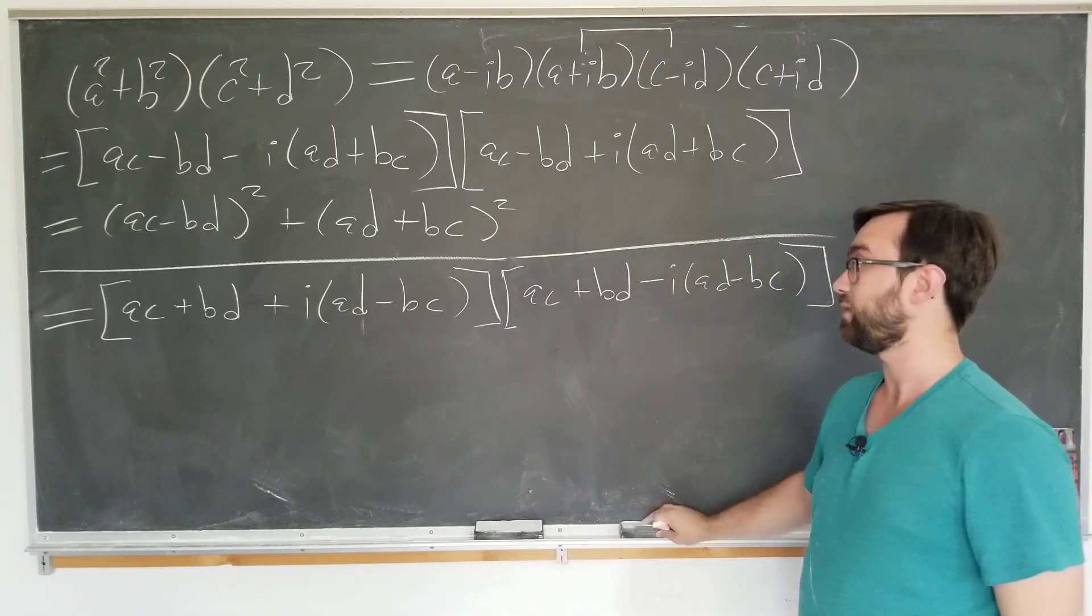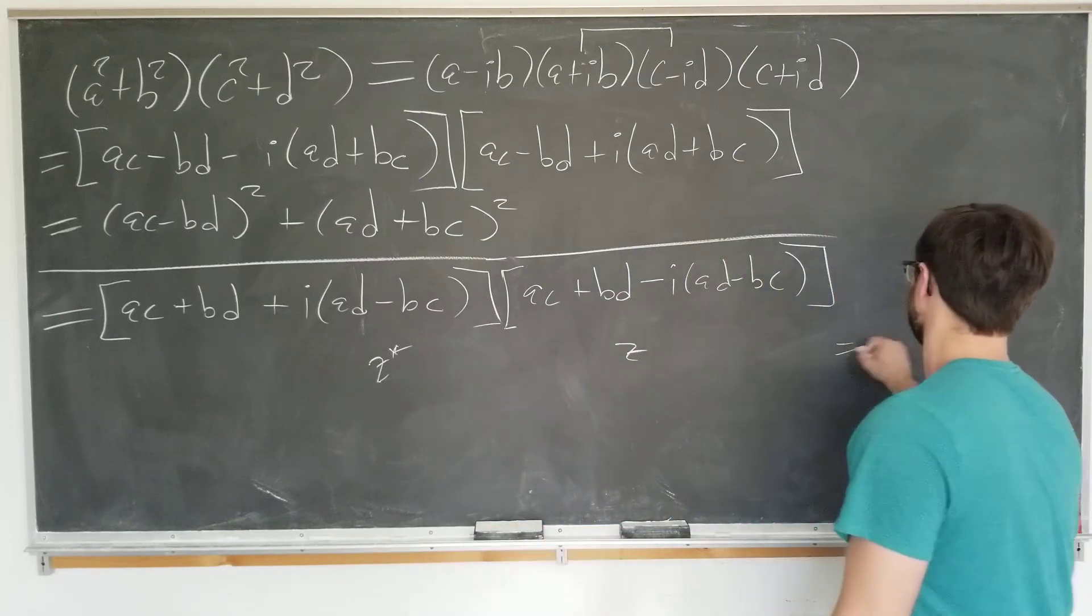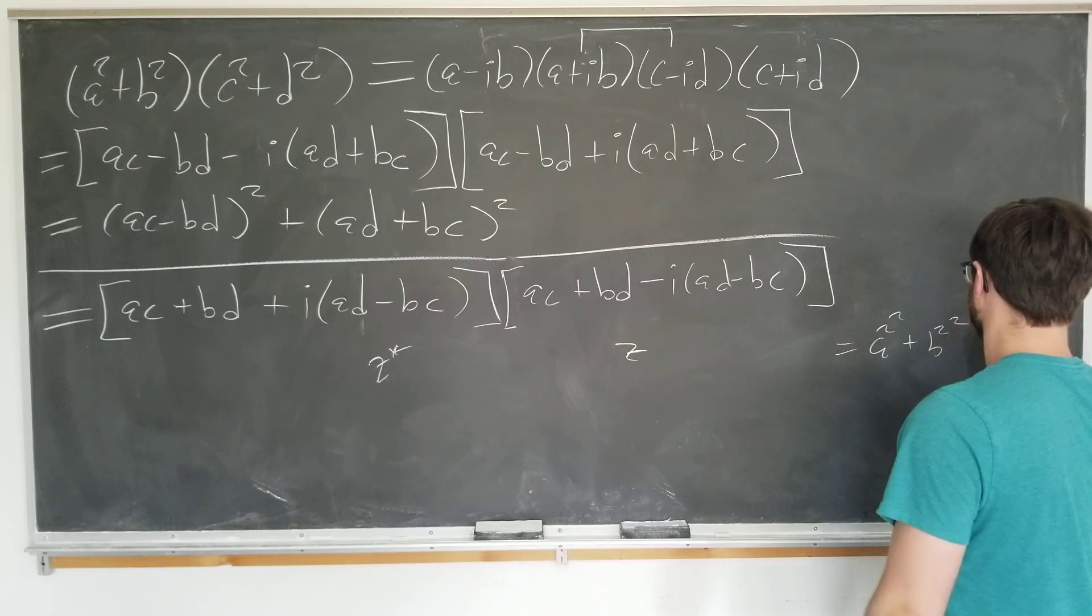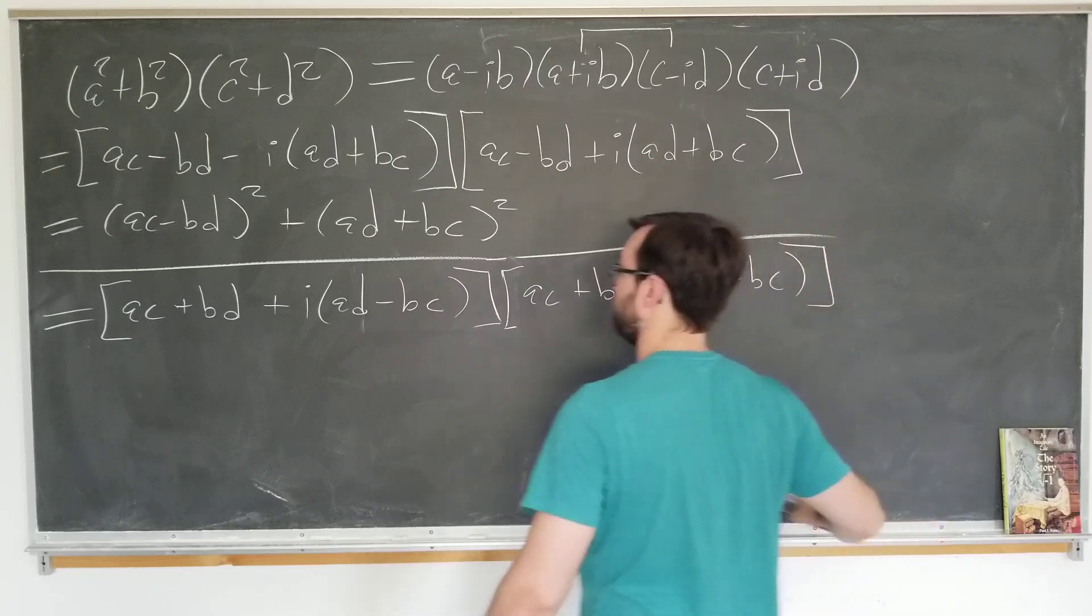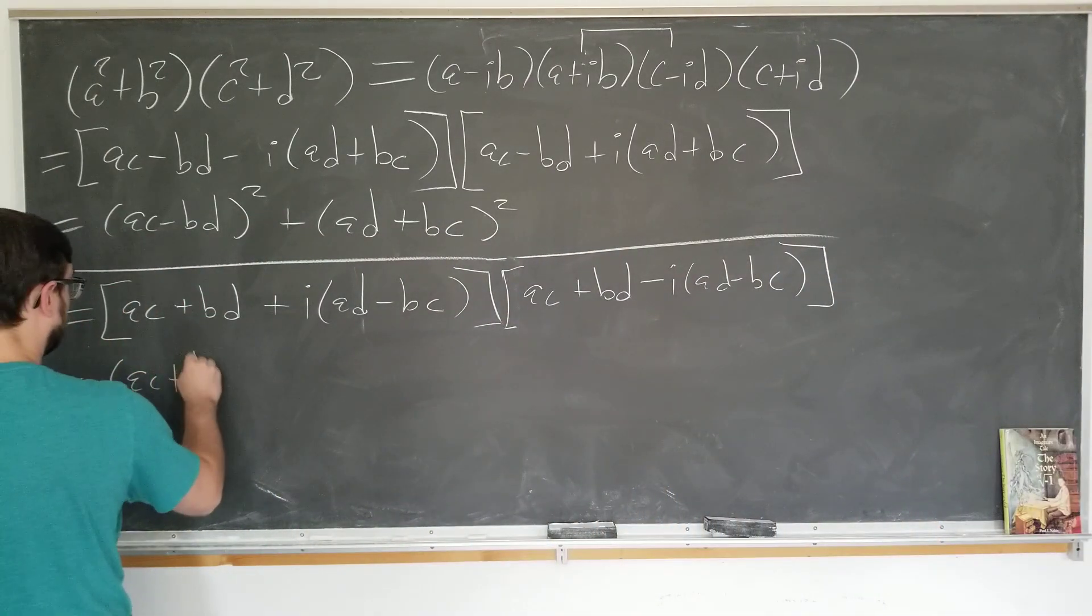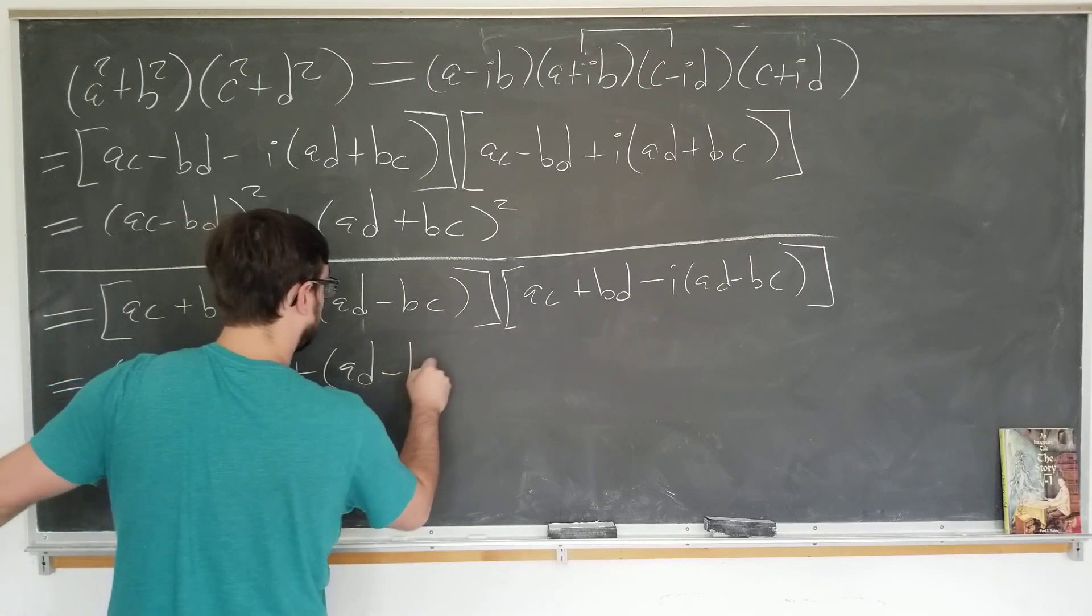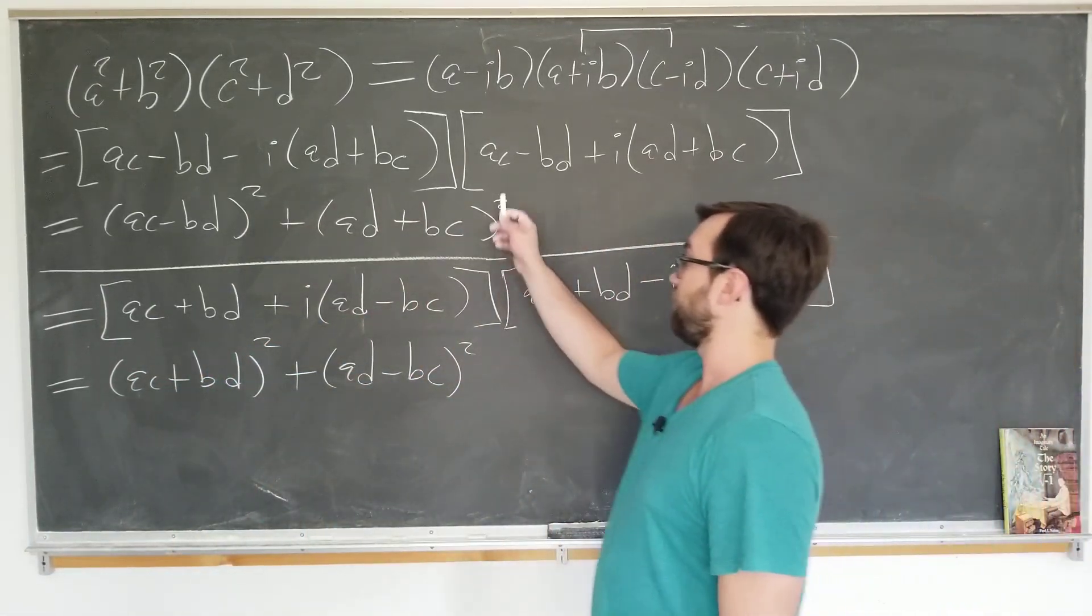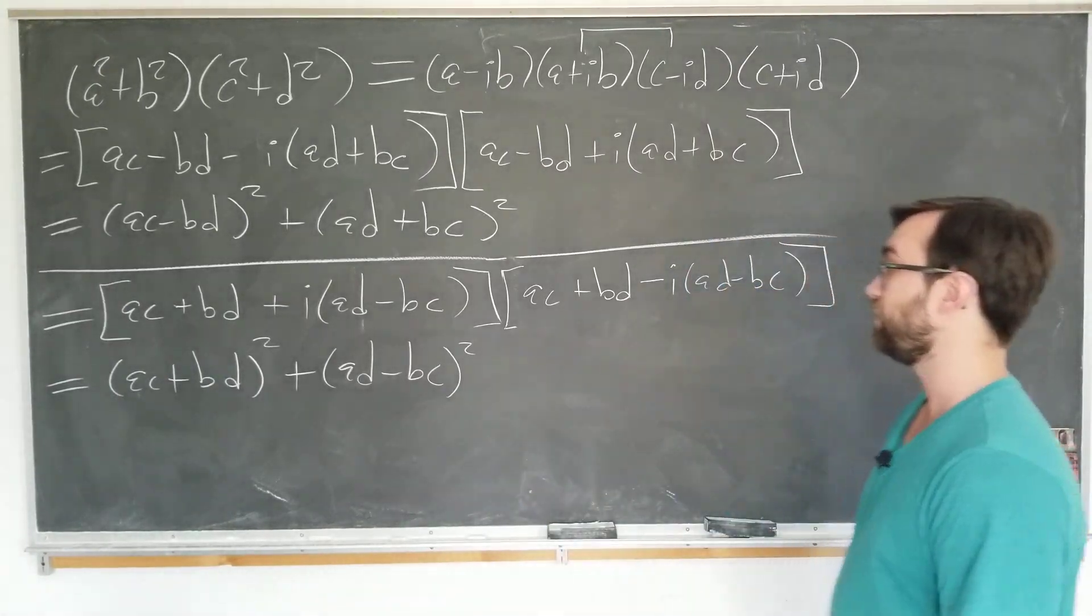Now we can use the same observation as before and immediately write this as a z star z style number. So it's some a squared plus b squared. What we can do now very easily to obtain our second solution. It's just ac plus bd squared plus ad minus bc squared. So as you note, it's just what we had up above, but with the plus and the minus line interchanged, which makes kind of intuitive sense.